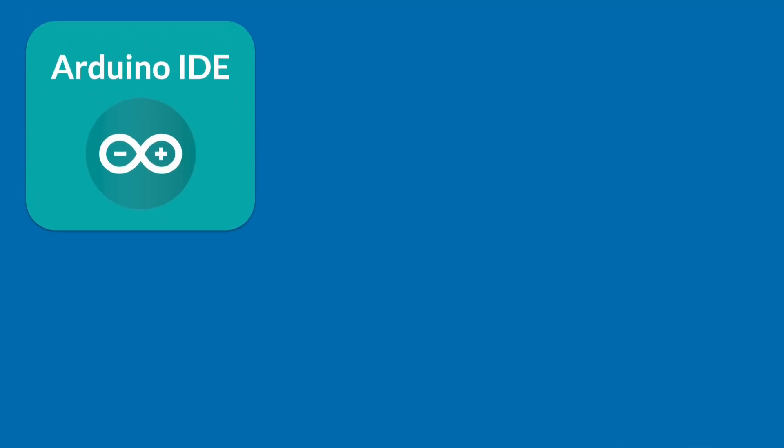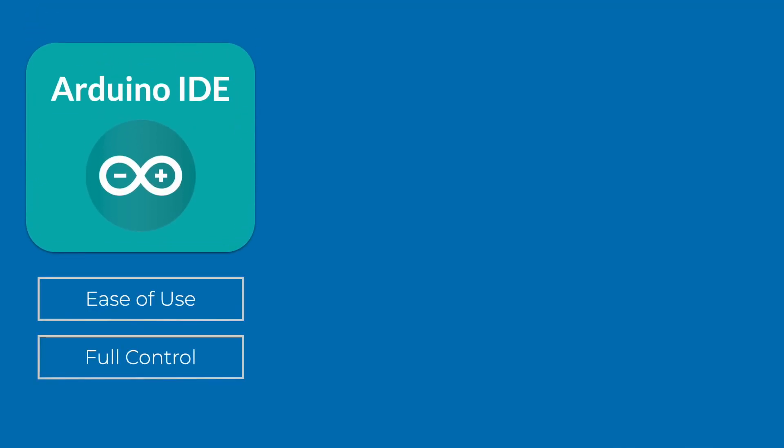Before we jump into the installation, let's talk about why choosing the right development environment actually matters. A lot of beginners underestimate this part, but your tools shape your entire learning experience. On one end, you've got the Arduino IDE. It's super simple — install it, add board support, and you can flash code within minutes. It's perfect for beginners, but once your project grows, you start to feel the limitations pretty quickly.